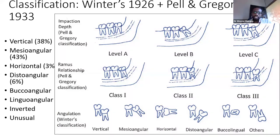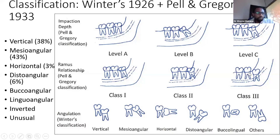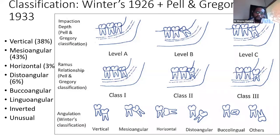This is very important: there is a temptation, particularly with vertical teeth, to think it is a very innocent tooth — and that is a very common disaster. You can end up spending seven days trying to extract one tooth. The ramus coverage is very critical when assessing the degree of difficulty. Be aware of the internal and external oblique ridges: the ramus is slanting backwards, so sometimes the ramus appears to cover the tooth yet the tooth is not actually in the ramus.